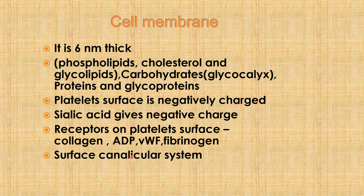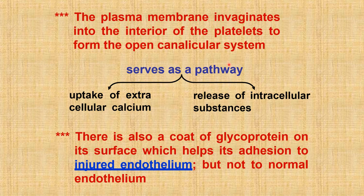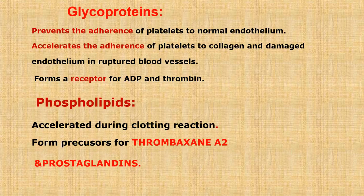Glycoproteins aid to prevent adherence of platelets to normal vascular endothelium. The plasma membrane invaginates into the interior of platelets to form an open canalicular system. This serves as a pathway for uptake of extracellular calcium and for the release of intracellular substances. A coat of glycoprotein on the surface helps adhesion to injured endothelium but not to normal endothelium. Glycoproteins prevent adherence to normal endothelium and accelerate adherence to collagen and damaged endothelium in ruptured vessels, and they form receptors for ADP and thrombin.